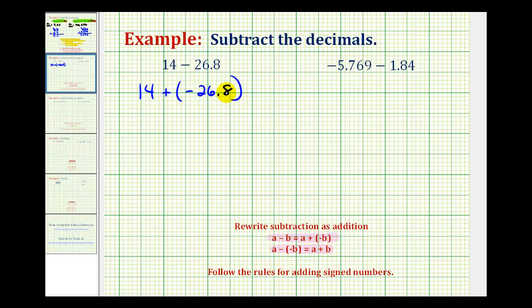Following the rules for adding signed decimals, because we have two numbers with different signs, we're actually going to subtract their absolute values. We'll always subtract the smaller absolute value from the larger absolute value. The absolute value of negative 26.8 would be positive 26.8, and the absolute value of positive 14 is positive 14. So we'll be subtracting 14 from 26.8.